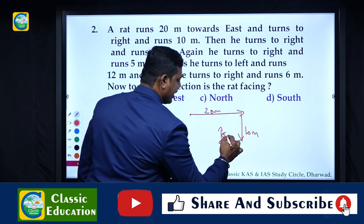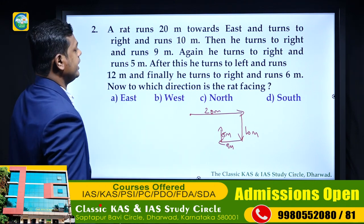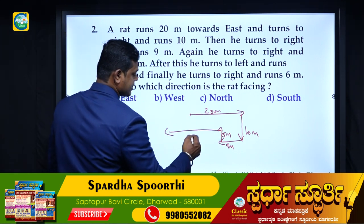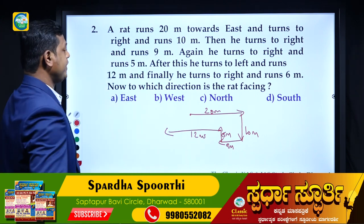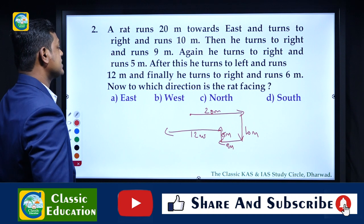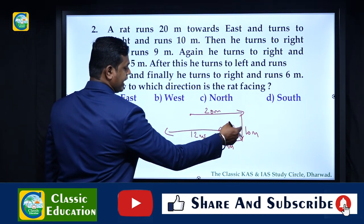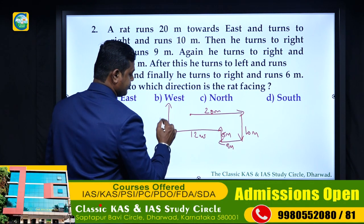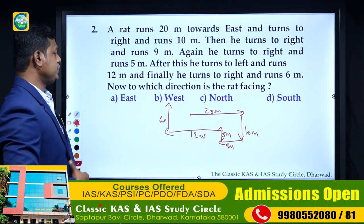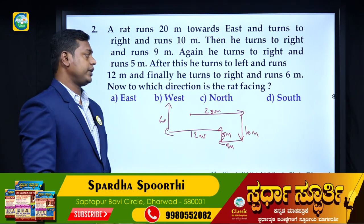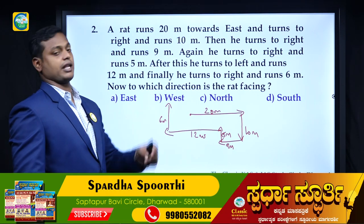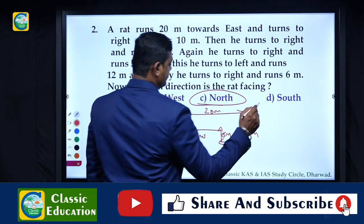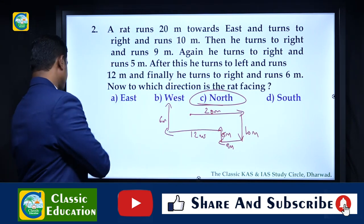After this, he turns left and runs 12 meters. Finally he turns to the right and runs 6 meters - the remaining distance on that axis was 5, so 6 minus 5 leaves 1 meter overshoot. The question is: which direction is the rat facing? The rat is facing north. So option number C is the answer.